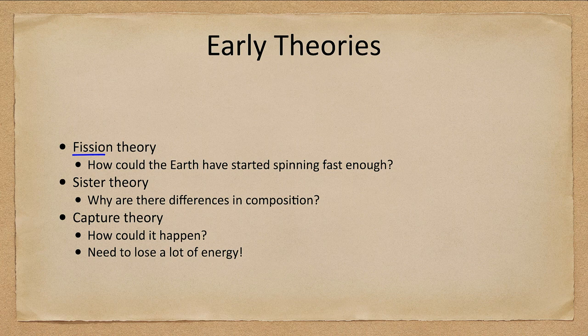However, the fission theory would explain some things. It would explain why the moon is much less dense than Earth, because it comes from the mantle and crust of Earth, which are mostly rocky, giving it a lower density than Earth, which has a large metallic core.